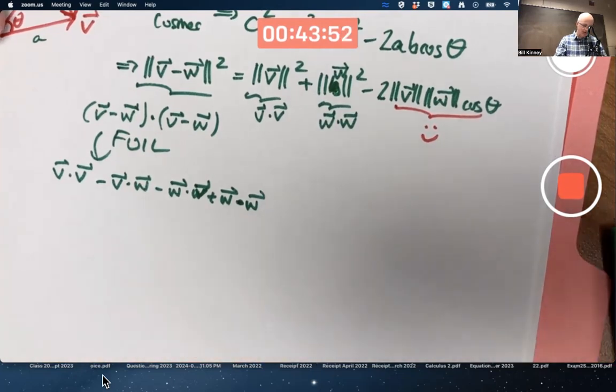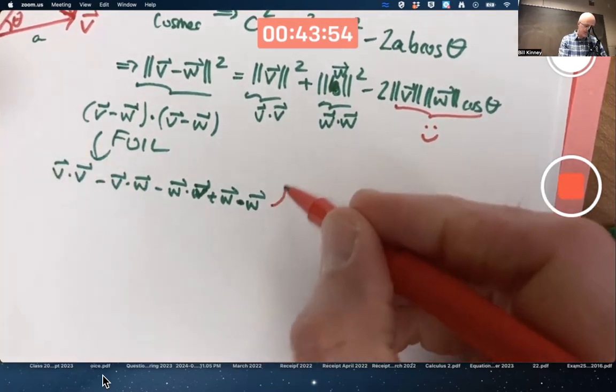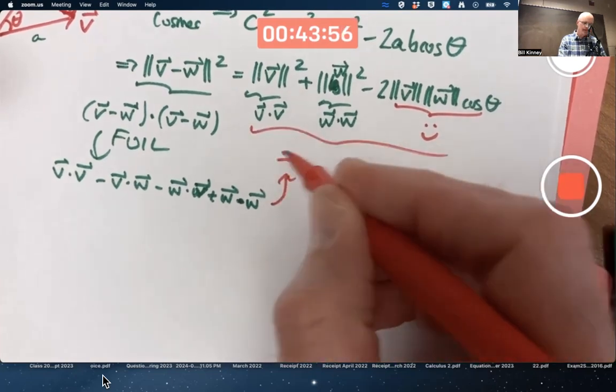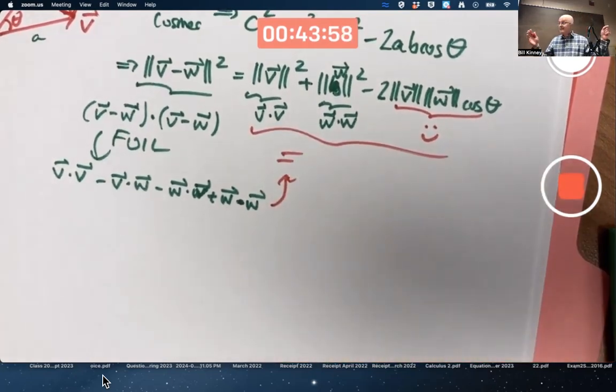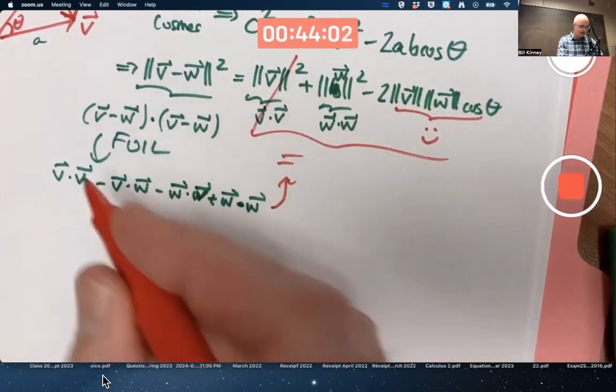And guess what? This is all supposed to equal this stuff up here. So we do get some cancellation. This cancels with this.